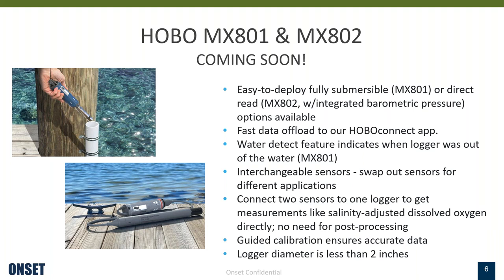There will also be a water detect feature on the 801 that will indicate on your data file when the logger was out of the water. One nice feature is that it will have interchangeable sensors, so you can swap out sensors for different applications. It allows you to connect two sensors to one logger to get measurements like salinity-adjusted dissolved oxygen directly, so no need for post-processing. We offer guided calibration for highly accurate data, and the logger itself will be less than two inches in diameter, which means it will fit down most stilling wells.